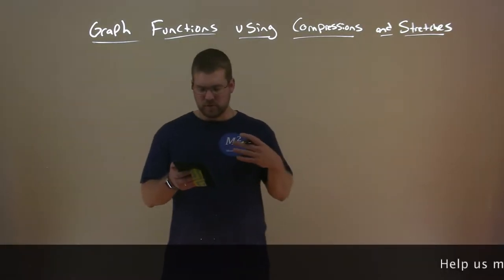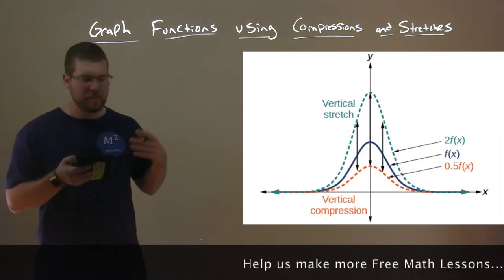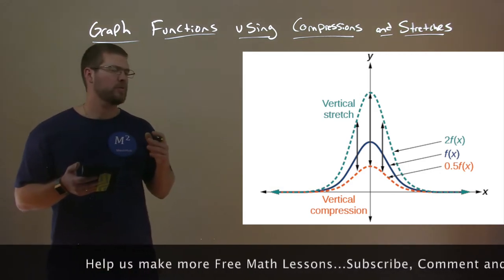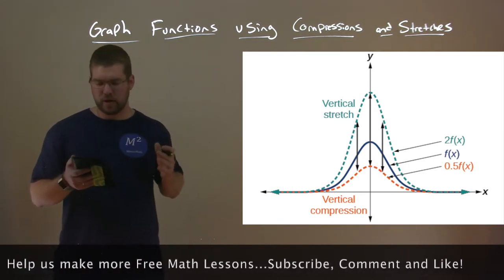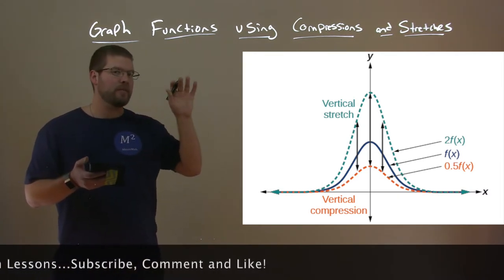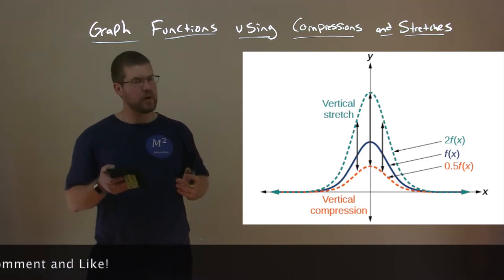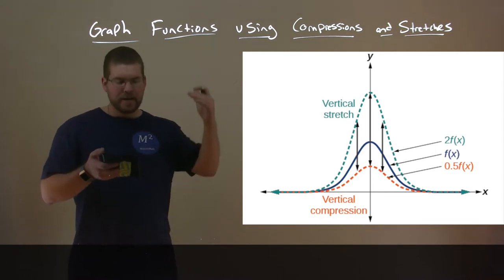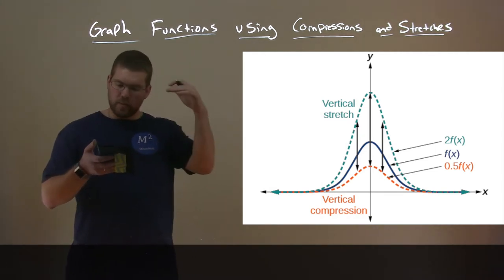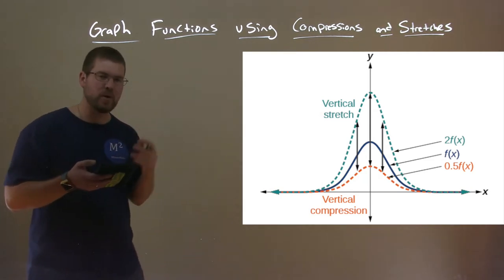So what is a vertical stretch or a vertical compression? Let's look at this image. We have our function f of x, which is in darker blue. A vertical stretch — two times that whole function — raises it up by a factor of two. We can see that in a teal dotted graph. A vertical compression, multiplying our function by 0.5, compresses it — almost cuts it in half. You can see it compresses vertically. That's the vertical compression, shown in orange.